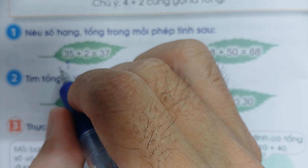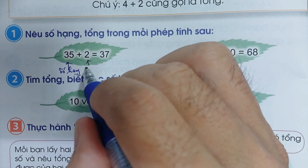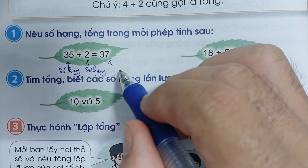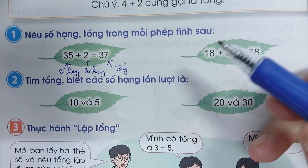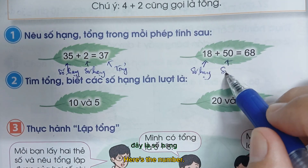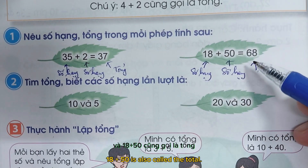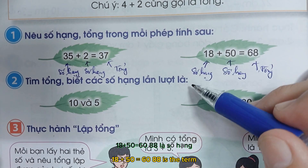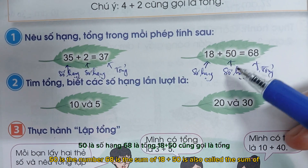35 cộng 2: đây là số hạng, và đây được gọi là tổng. 18 cộng 50: đây là số hạng, đây là số hạng, và đây là tổng. 18 cộng 50 bằng 68 — 18 là số hạng, 50 là số hạng, 68 là tổng. 18 cộng 50 cũng gọi là tổng.